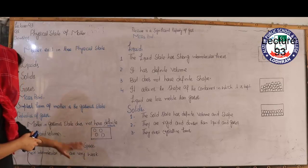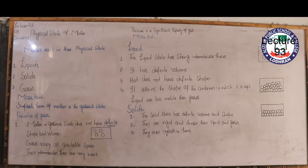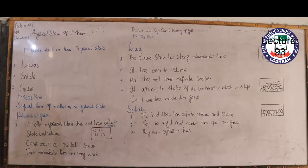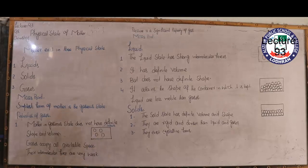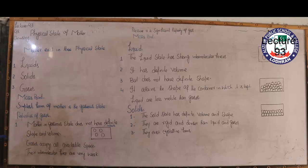Gas molecules process intermolecular forces but they are very weak, and this is the reason they have more available space and can move easily. For example, when we put perfume in a room and go out, the next person who enters feels it very quickly because gas molecules spread rapidly due to weak intermolecular forces and occupying all available space.